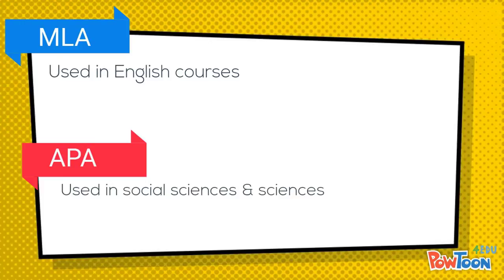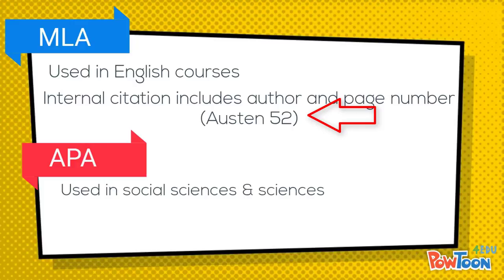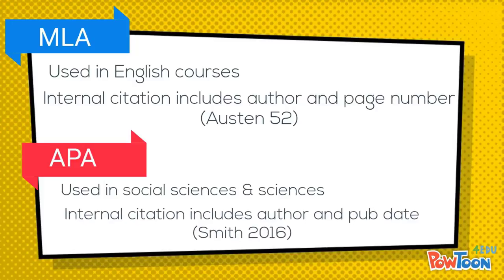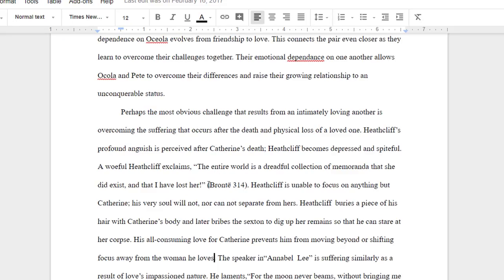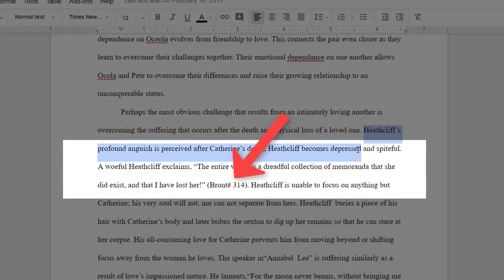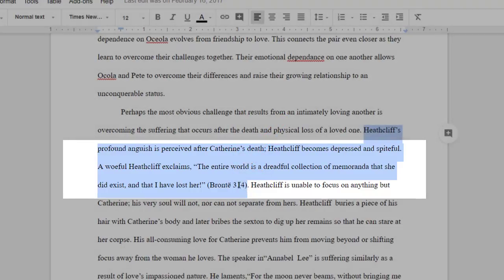You need to always use internal citations. An MLA internal citation includes the author's last name and the page number where that information came from. In English classes, knowing where something is located in a cited work is much more important than when that work was written. Seeing that an event happened on page 314 is more useful if you want to track down a scene or quote, compared to just having the date the novel was published.